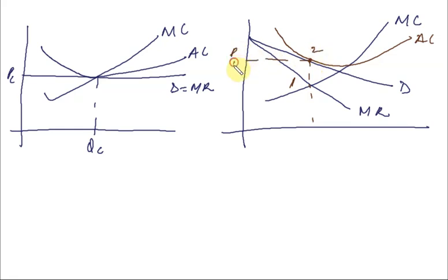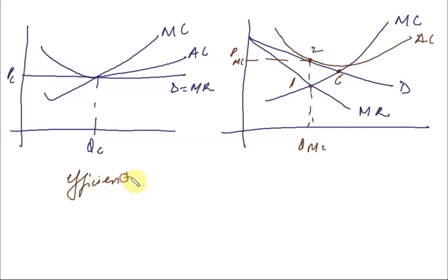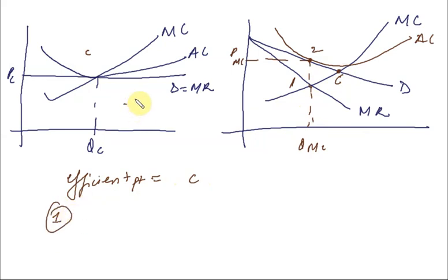The price and quantity of monopolistic competition are determined at equilibrium point one. The efficient point — in both perfect competition and monopolistic competition — is point C. But my equilibrium is occurring at point one, not at C. So what is the difference between perfect competition and monopolistic competition in terms of efficiency?